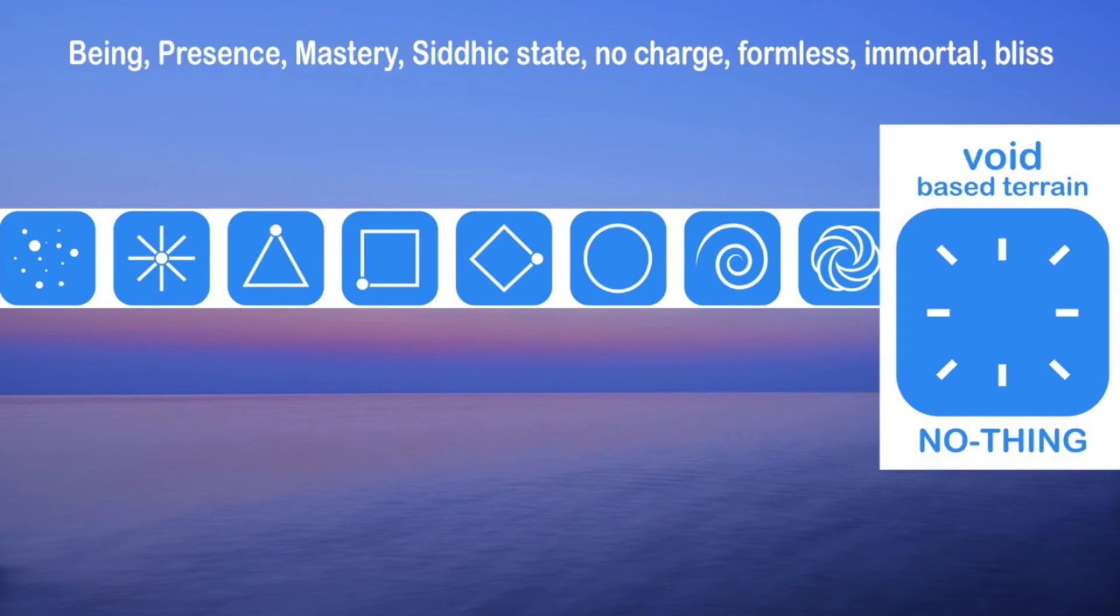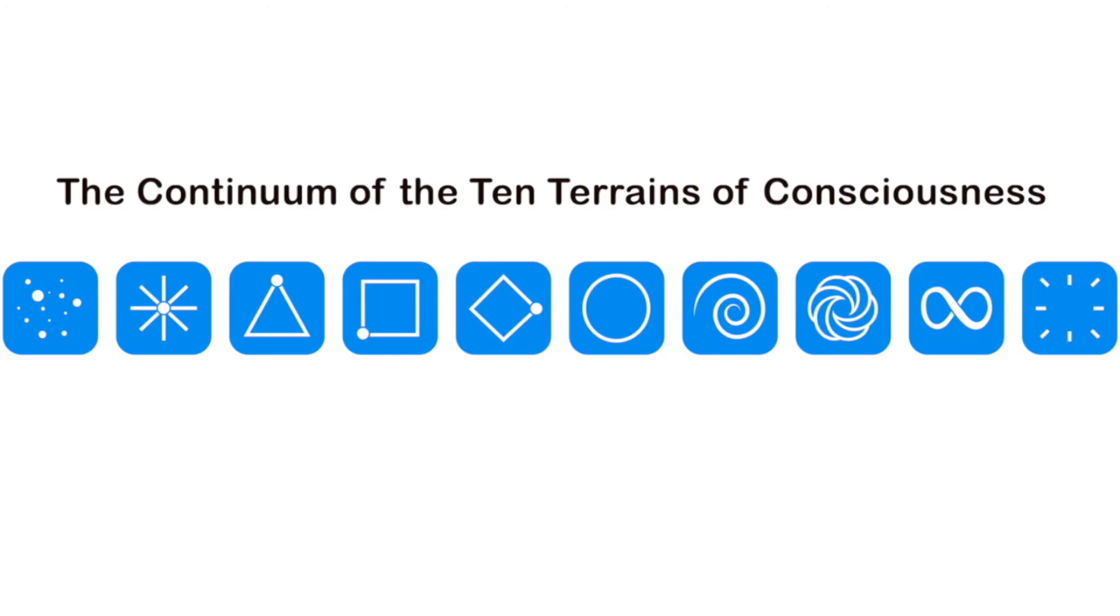And then the final one, which is just a bookend, you're not going to meet anyone at this terrain, but the void-based terrain no thing. Think of, like, ascended masters, people who are beyond physical form, that they're basically beings of light. But these are just the bookends, the particle and no thing, and either end of the continuum, just to give us the complete picture.